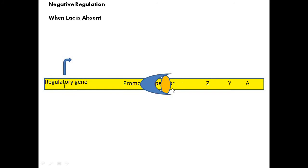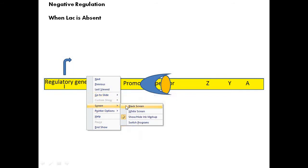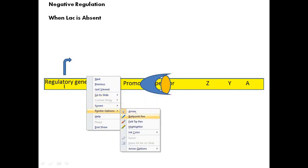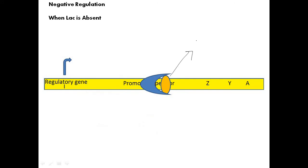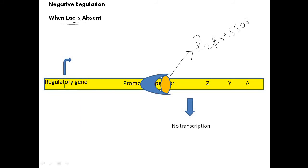When there is no lactose, the repressor protein goes and binds to the operator region, and RNA polymerase has no access to transcribe the gene. The protein binding to the operator acts as a repressor, meaning the operon is negatively regulated. In the absence of lactose, the lac repressor binds to the operator and RNA polymerase cannot initiate transcription — transcription is off.